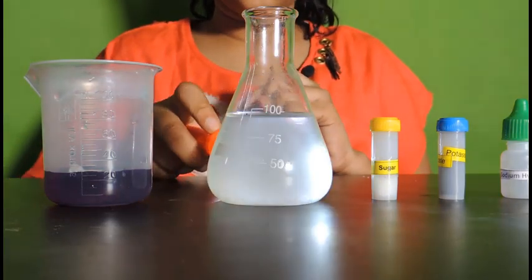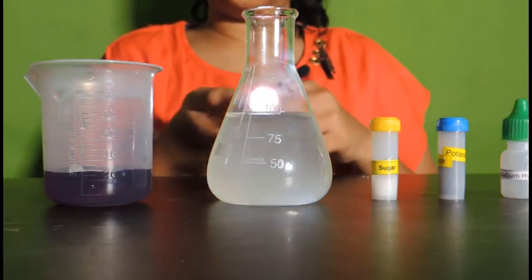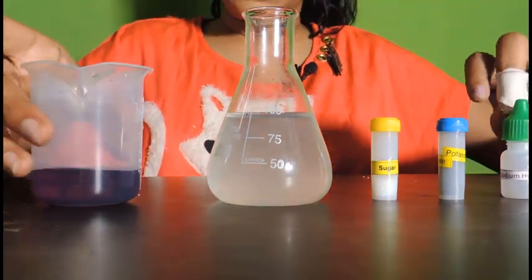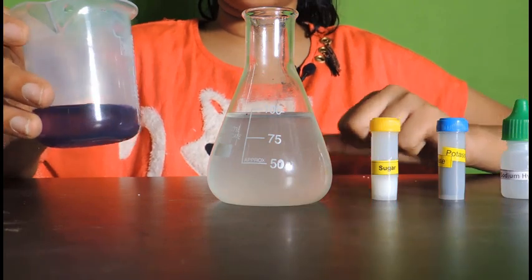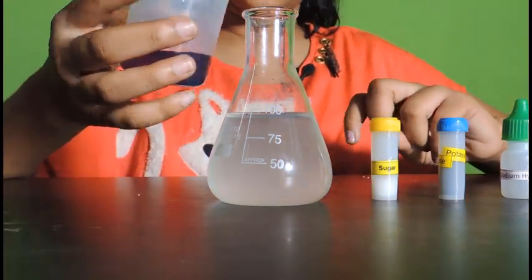You can see the alkaline solution of sugar. Here the sugar acts as a reducing agent. Now let's add 20 ml of potassium permanganate solution into the sugar and sodium hydroxide solution.